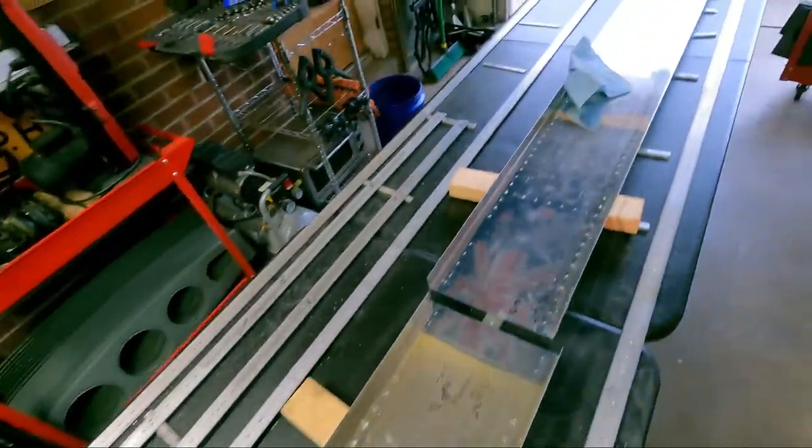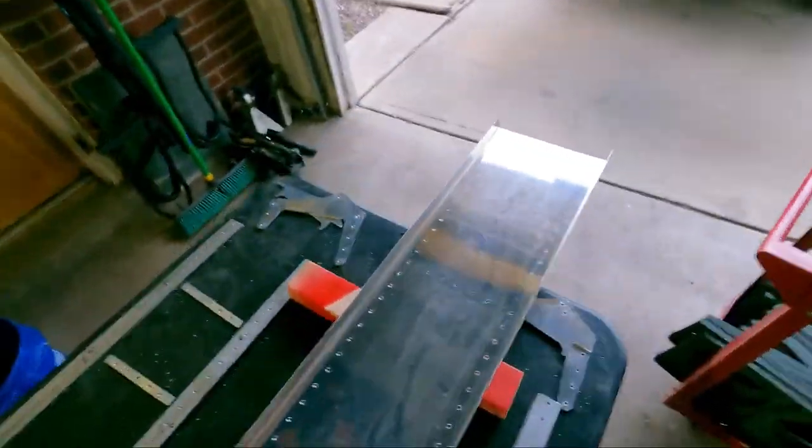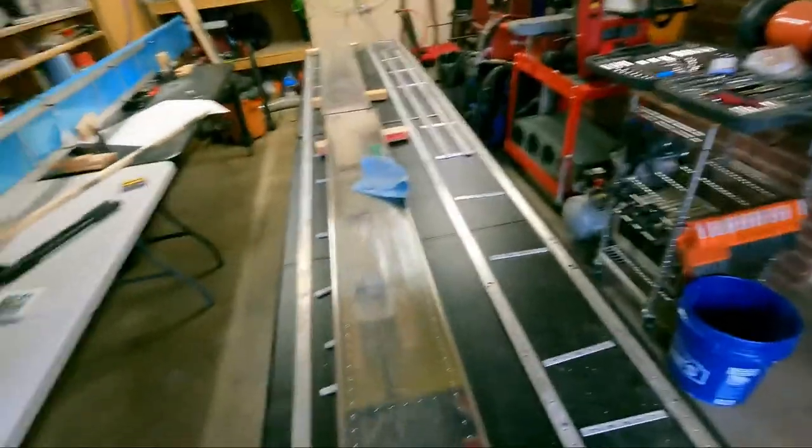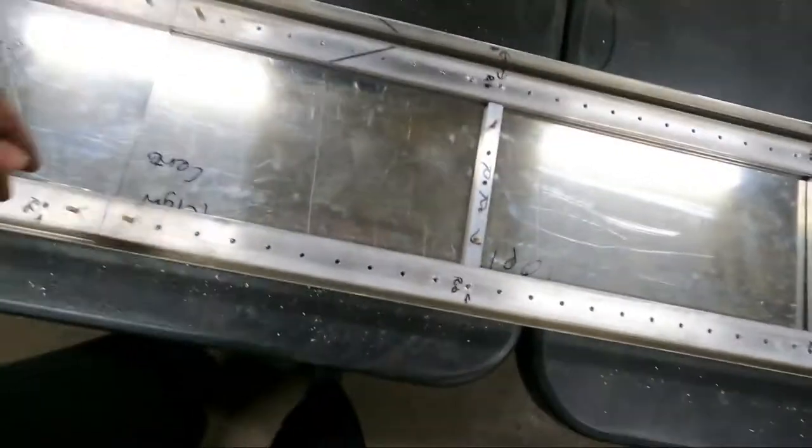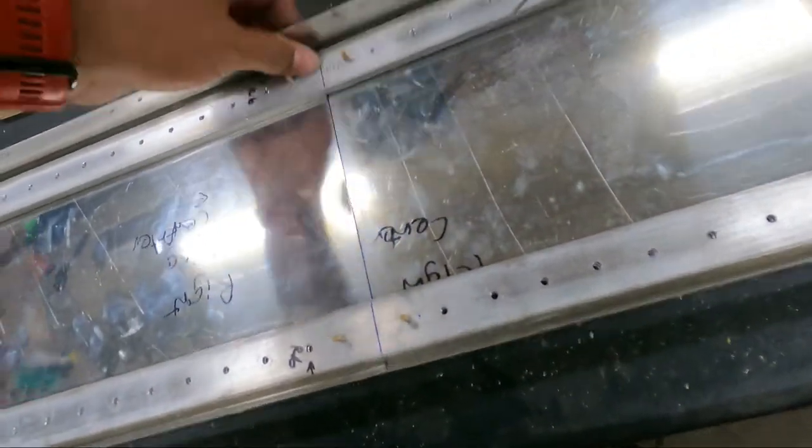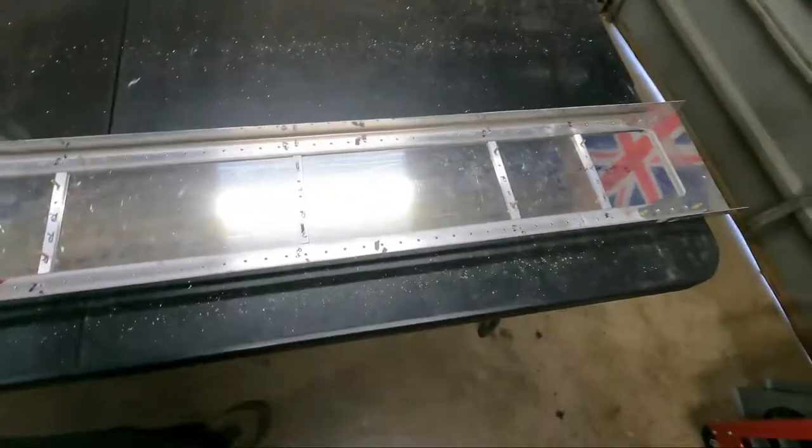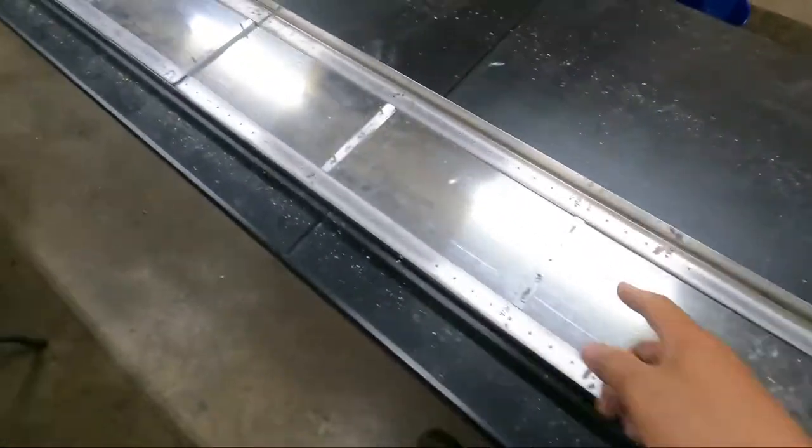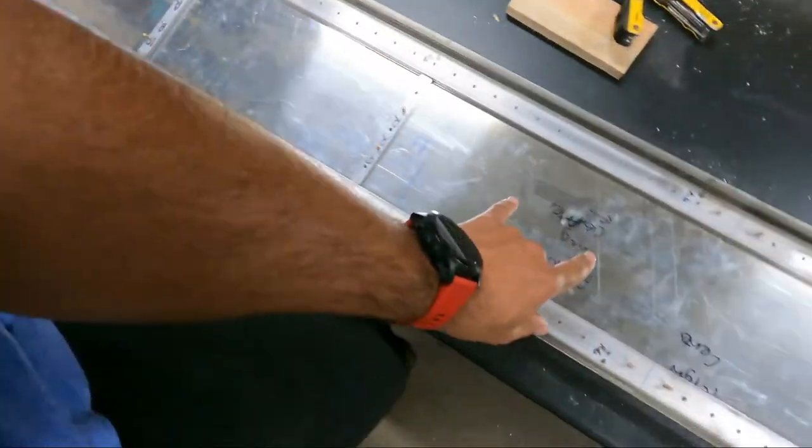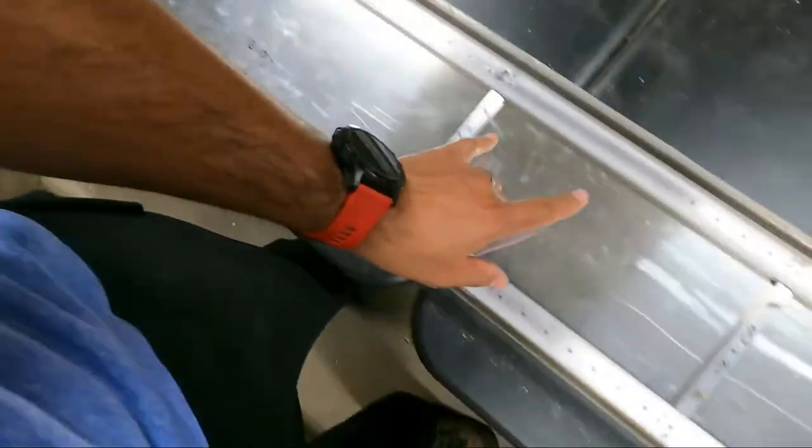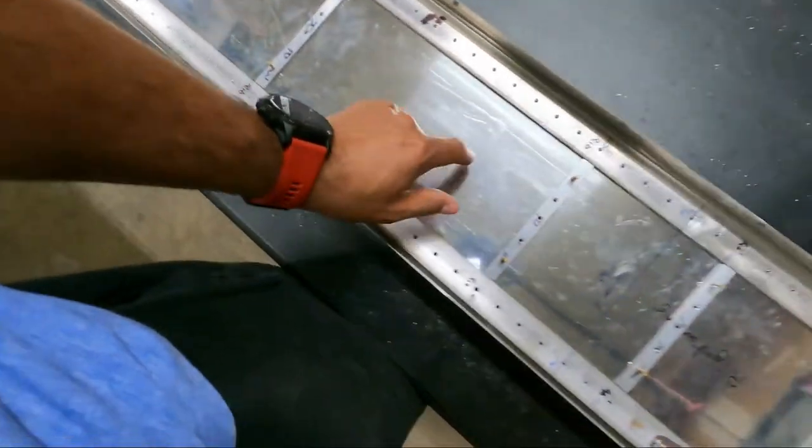All the holes for the right spar, right wing main spar, are deburred. My wrist hurts. Now on to the next portion of the build. I put in some extra long rivets, the dash 16s, as placeholders. I'm gonna now mark out where the holes are supposed to go - where the big holes are supposed to go.